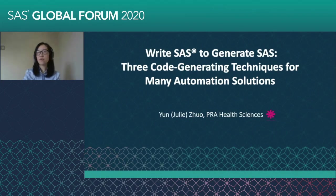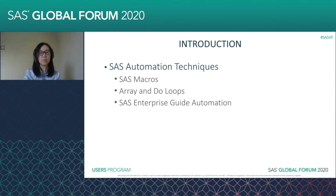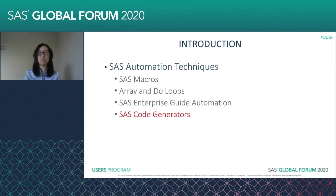There are three code generating techniques for many automation solutions. We are going to talk about three SAS techniques. SAS has a lot of automation techniques, including SAS macros, SAS arrays, and do loops. If you use Enterprise Guide, it also has automation specific to EG. Today we are going to focus on SAS code generators, because it does not always become intuitive for SAS programmers to think in terms of writing SAS code which will generate a lot of SAS code, to improve efficiency and accomplish automations that cannot be accomplished otherwise.